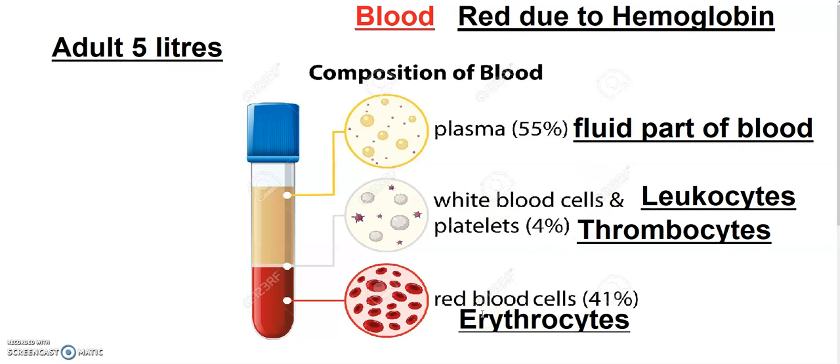The details of RBC, WBC, and platelets — their structure, functioning, functions, roles, life span, and whether they have a nucleus — will be covered in the next video. This was only the introductory part, the composition of blood. Okay students, thank you.